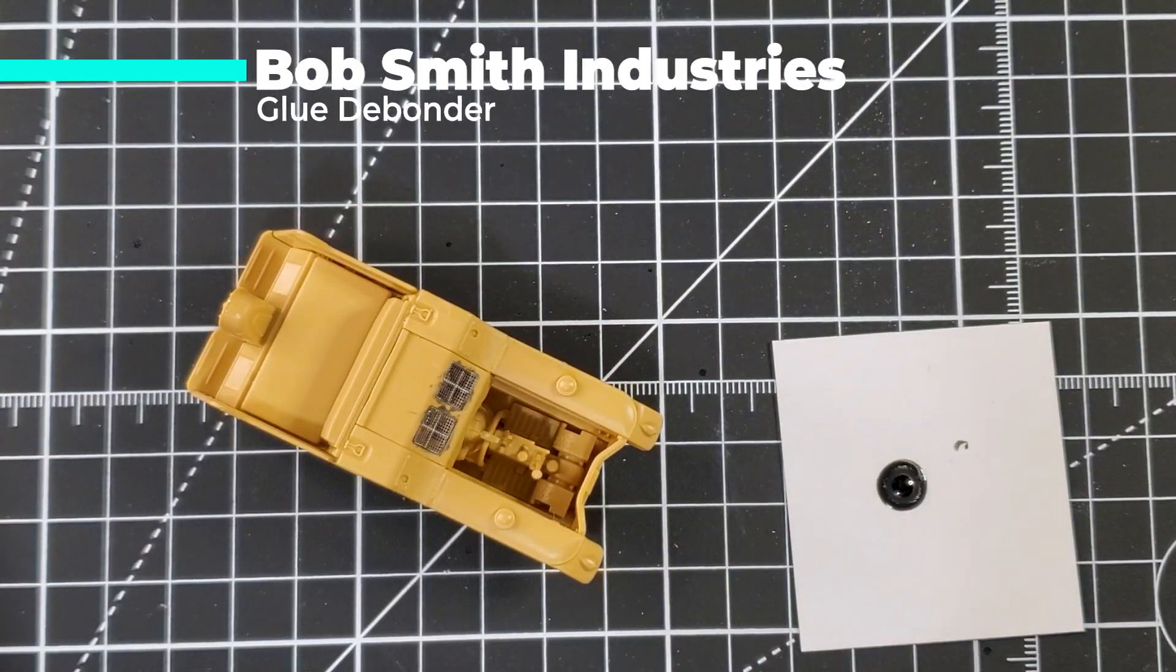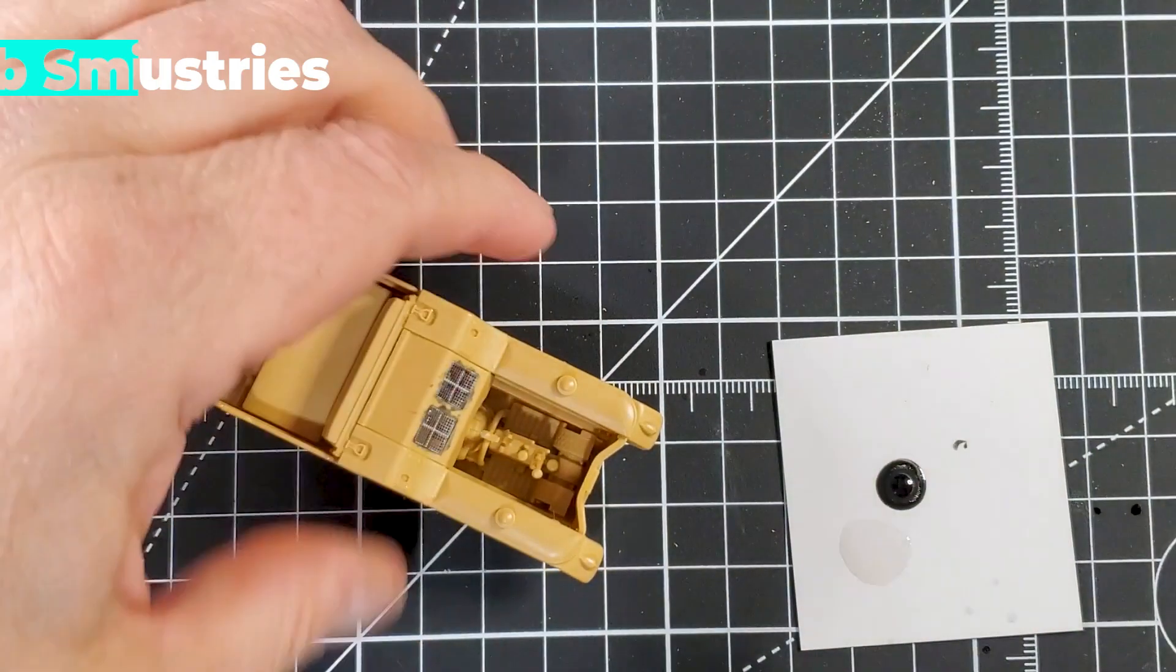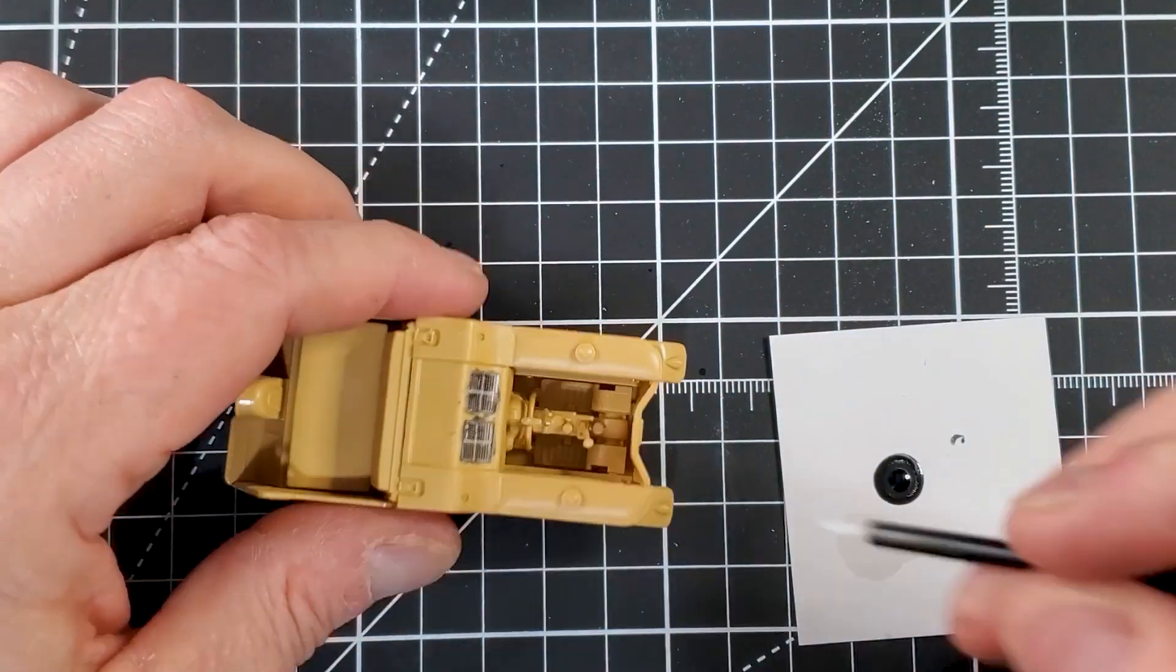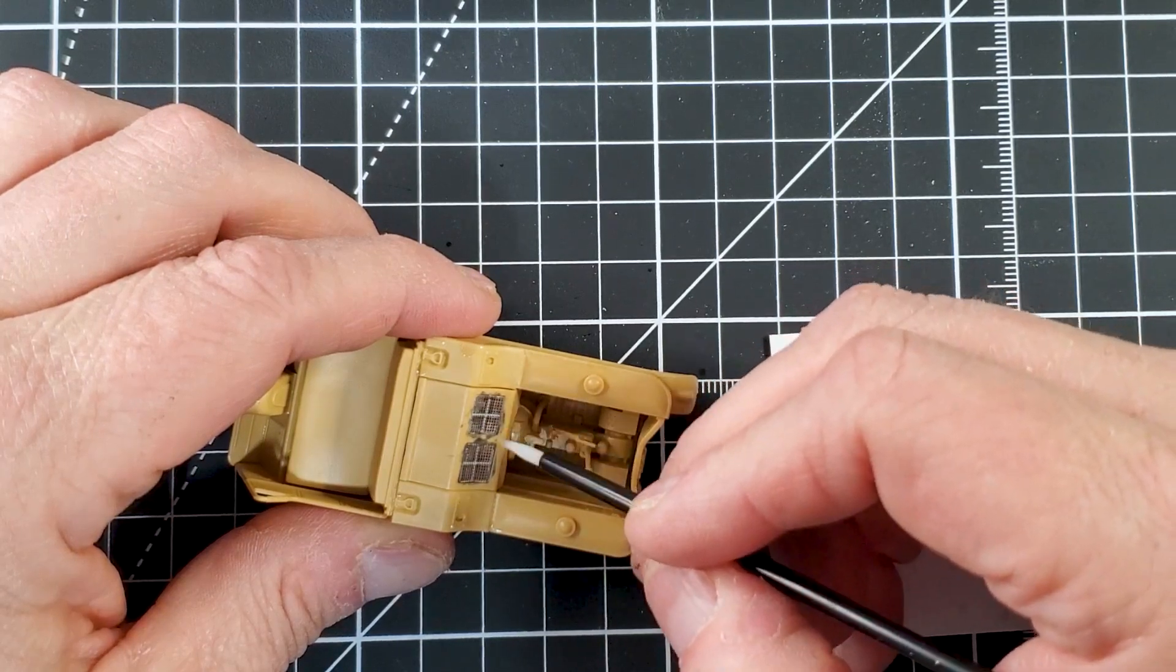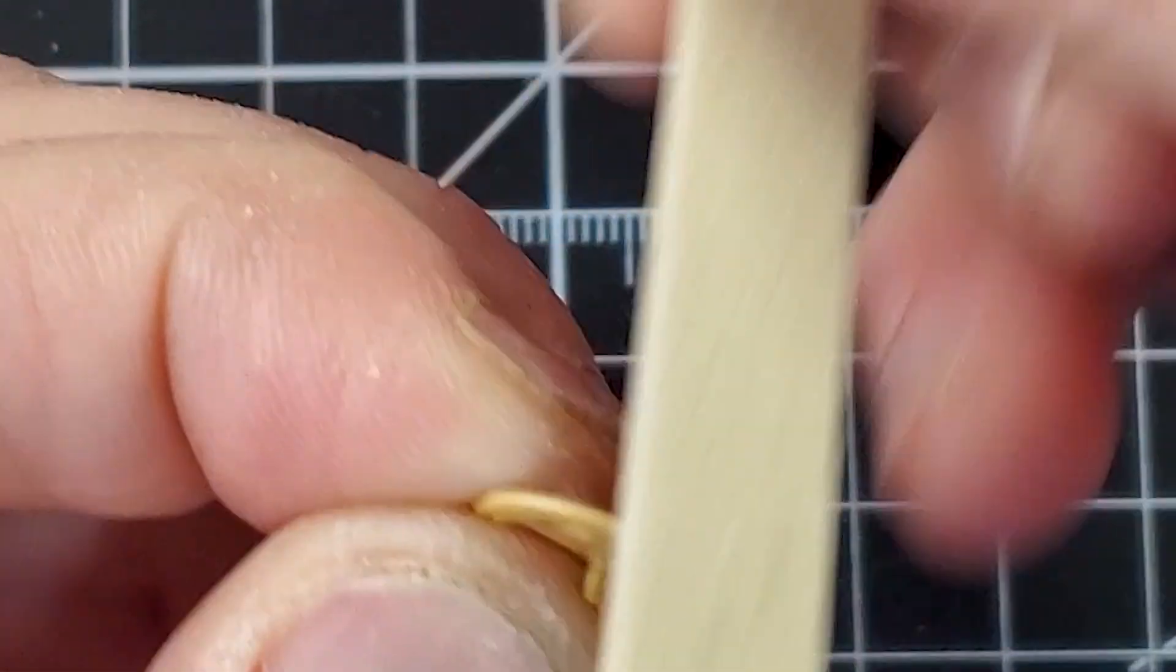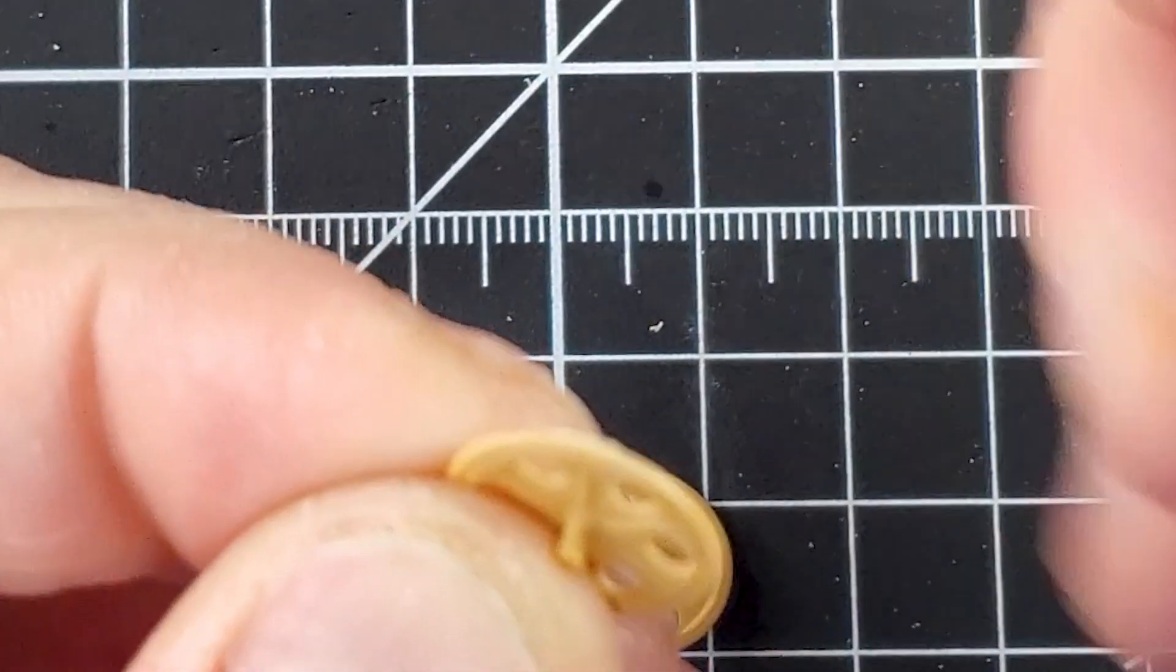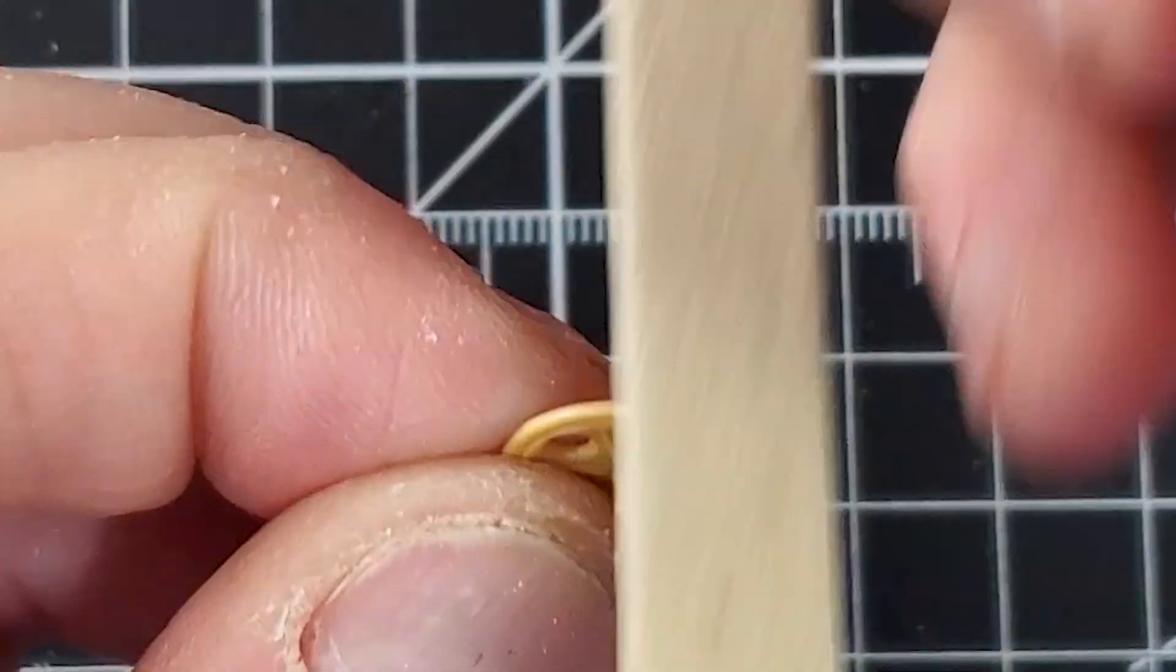I'm using the debonder from Bob Smith just to remove the CA glue, like the black one that will show through the photo-etch part. So you're just gonna use the debonder. This kit overall is pretty straightforward, not a lot of sanding, not a lot of seam lines, so it's a really nice kit.